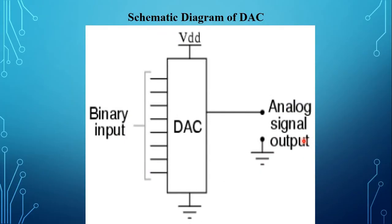This is the schematic diagram of the DAC — digital to analog converter. The inputs are digital (D0 to D7, that is 8 input lines) and only one output line. A microcomputer is a digital system and handles only digital signals.